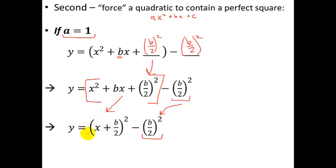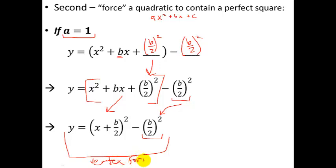The overall idea is not super complicated, but carrying it out requires you to remember that the perfect square piece you need is half the middle number. If there was any number already there that was the wrong number, you can always just push it to the back — I'll show you what I mean by that in the examples.